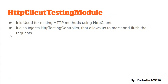Before we move ahead with our actual testing, I want to introduce you to some of the modules and objects we are going to use. The first one is the HttpClientTestingModule. It is used for testing HTTP methods using HttpClient. Instead of using the HttpClientModule that we use for writing HTTP or AJAX requests, we are going to use a specialized module specifically created to unit test HTTP requests. This module injects a special controller called HttpTestingController that allows us to mock and flush requests.